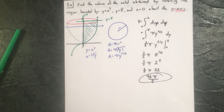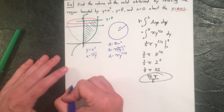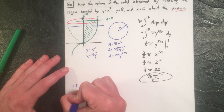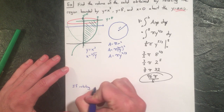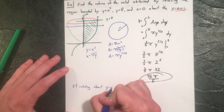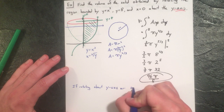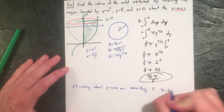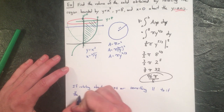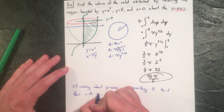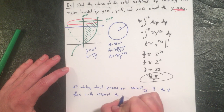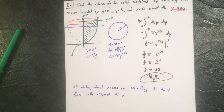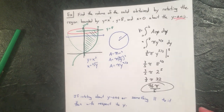The same side note as before: if rotating about the y-axis, or something parallel to it, then you integrate with respect to y. The telltale clue is what you're spinning around — is it parallel to the x-axis or the y-axis?